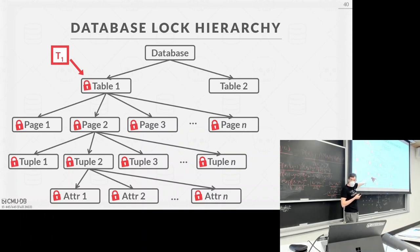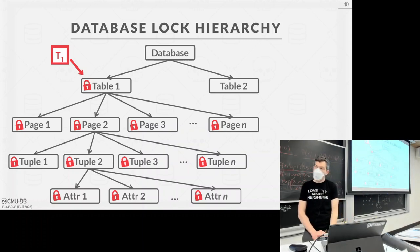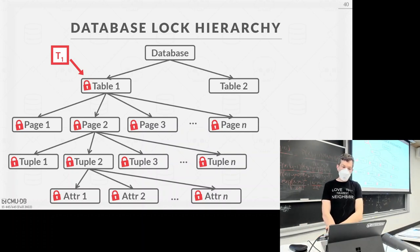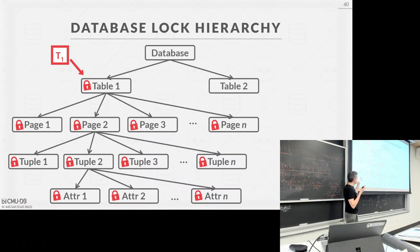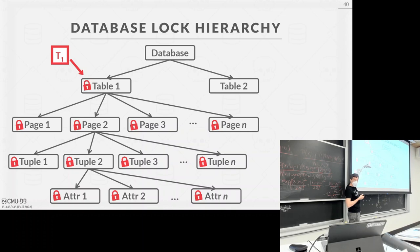Everyone follows the same protocol — no one can come in and do things at the bottom without going through the top. If a transaction wants to lock only a tuple, it goes down from the database to the tuple and locks it. This is what intention locks handle for us: everyone has to acquire locks at each level as you go down.